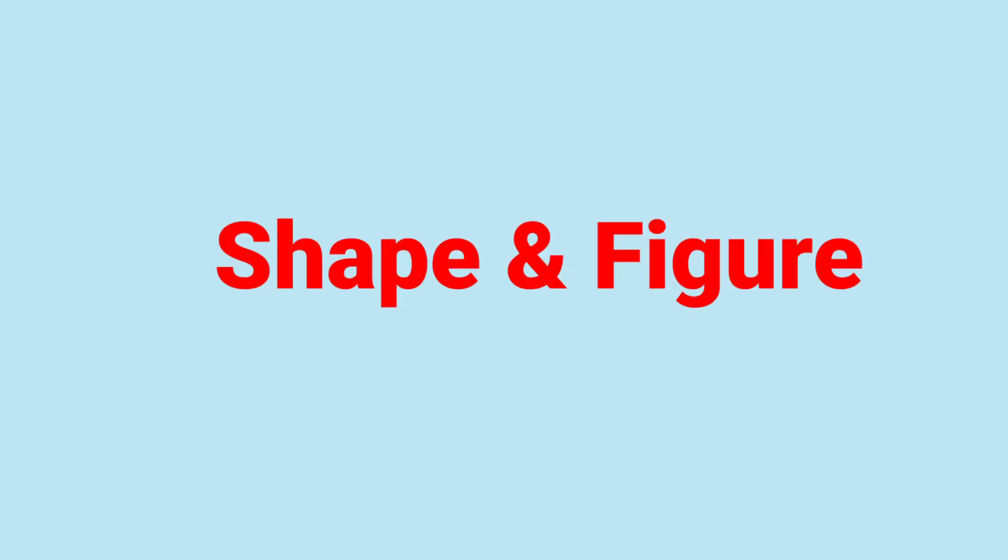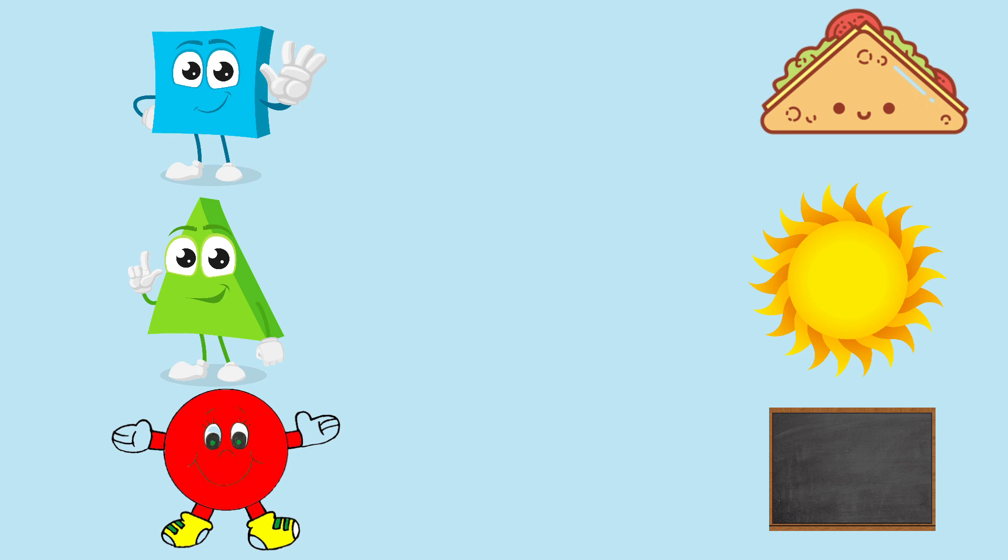First, we match different types of shapes with figures. So, let's see. Students, see the picture. Here, one side is square, triangle, and last one, circle. So, here we see different types of shapes. And on the other side, pizza, sun, and blackboard. So, now we match shapes with figures.